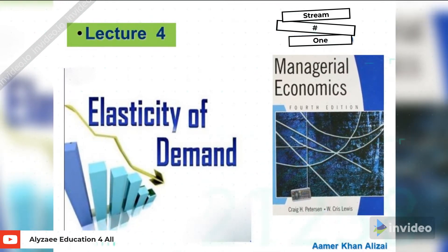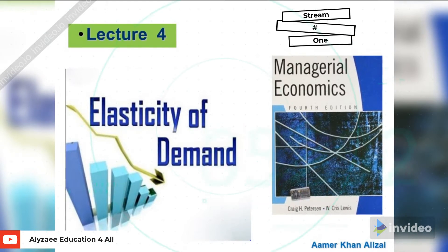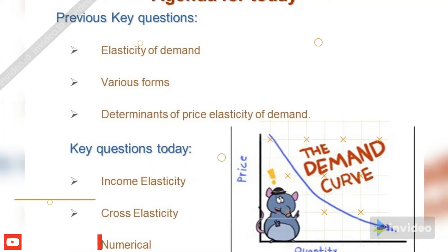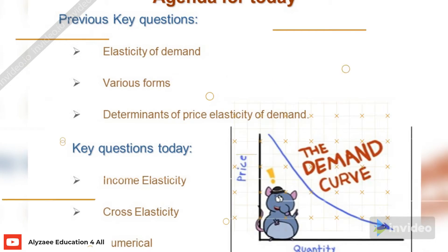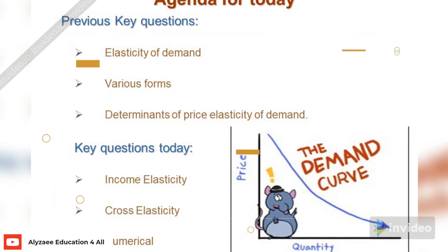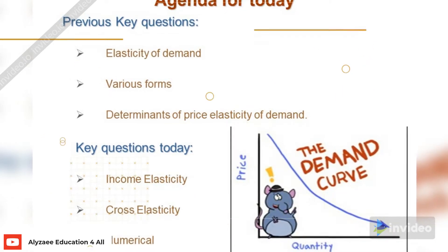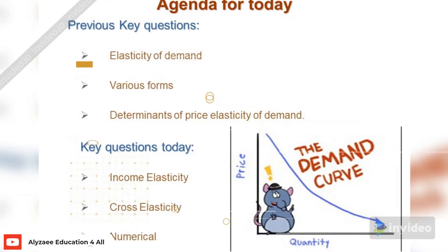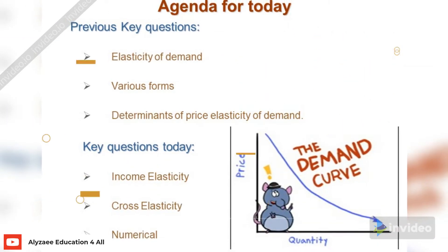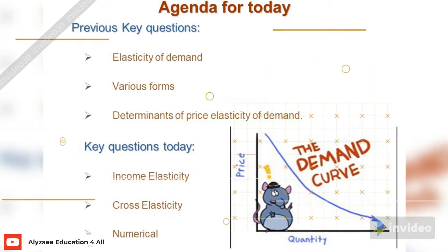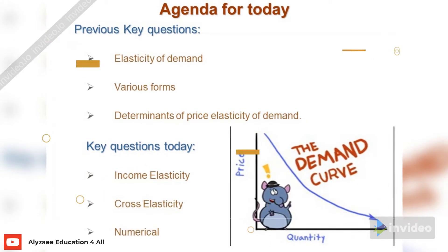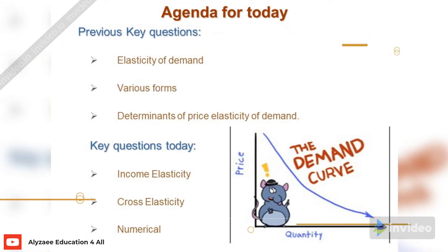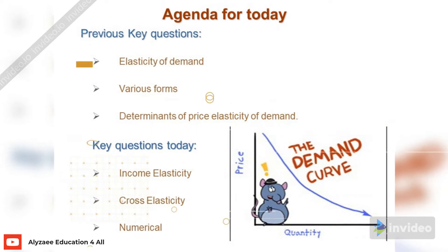In the last lecture, we discussed elasticity of demand — various forms and determinants of price elasticity of demand. In today's lecture, we will be discussing income elasticity and cross elasticity, going into the details to understand the basic logic behind them.